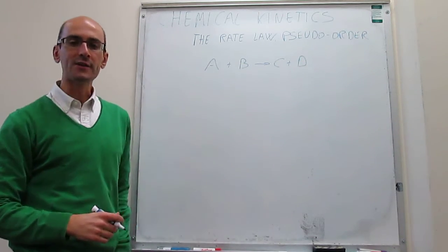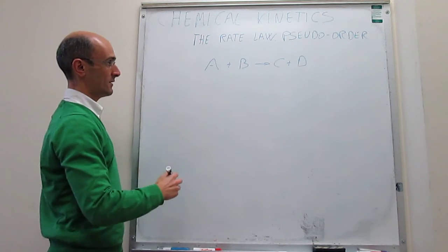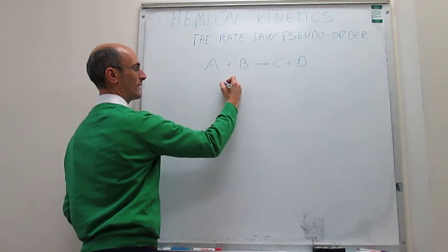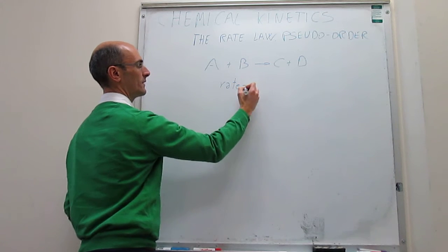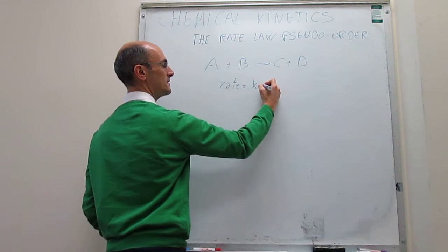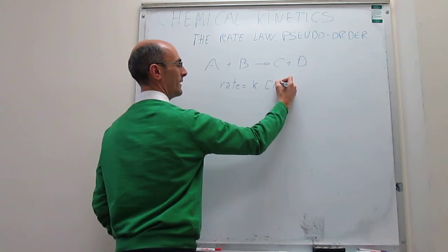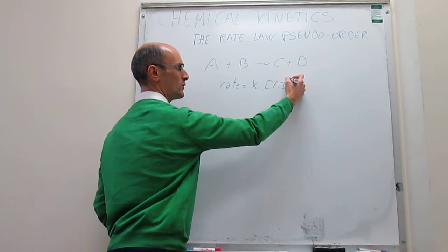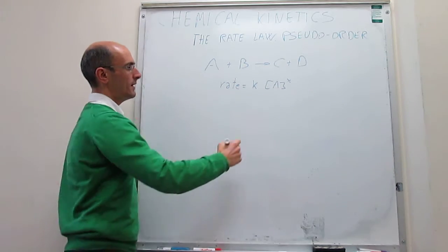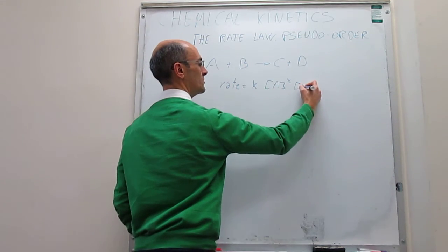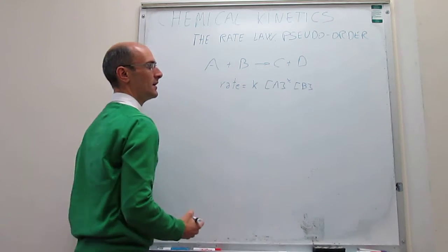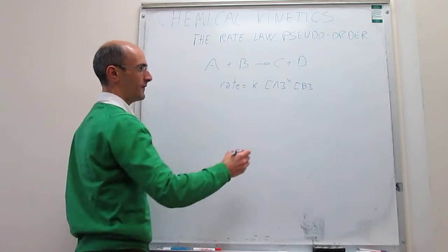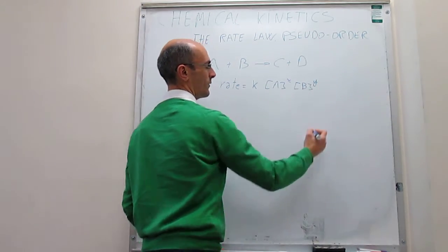For example, for a generic reaction A plus B to give C plus D, we would write the rate law as rate equals a rate constant multiplied by the concentration of reagent A to an order which we in principle don't know, multiplied by the concentration of the other reagent to the power of an order that we also need to determine, with no a priori.